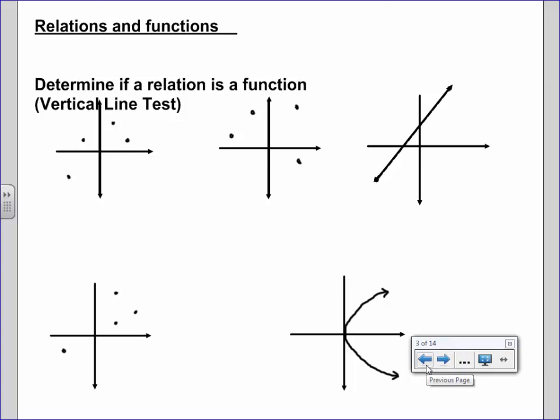Now we have something called a vertical line test. This is to determine if a relation is a function. If you can draw a vertical line and it can pass through more than one point, it fails the test and it is not a function. Some people get this switched around 180 degrees.